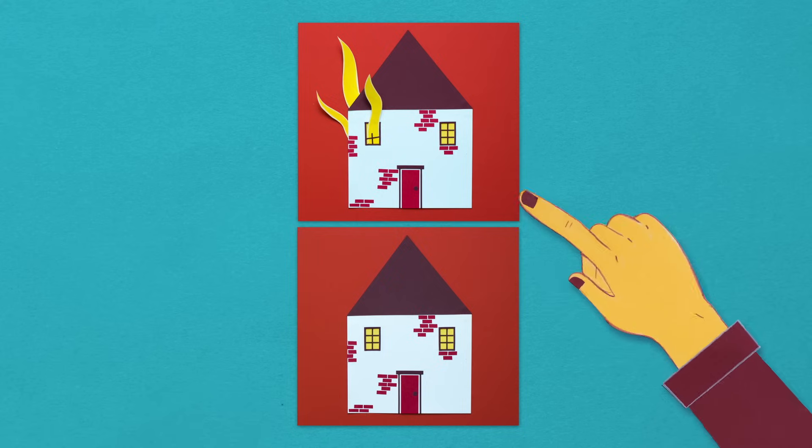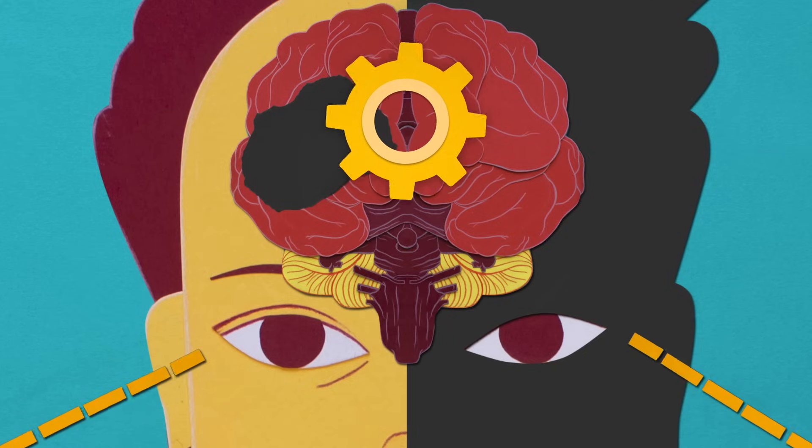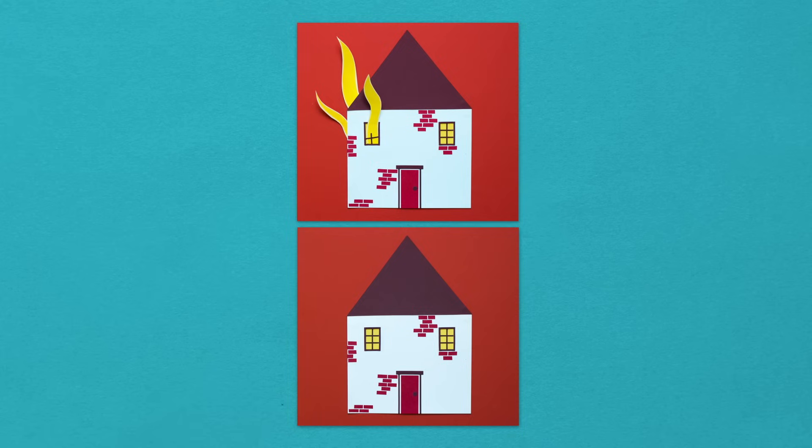Not once, but again and again. P.S.'s brain was still processing information from her whole field of vision. She could see both images and tell the difference between them. She just didn't know it.